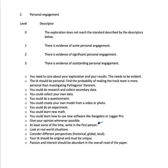At least when you're reflecting, write in the first person. Look at real world situations and consider different perspectives — historical, global, local — what's going on. That might not be applicable in your situation, but if you can do it, do it. For example, if you're modeling climate change, consider how it's affecting a certain particular place in the world or the whole world. Your IA should be original and must be unique.